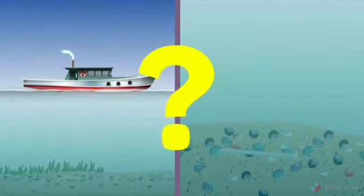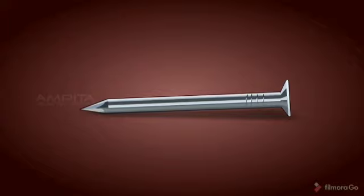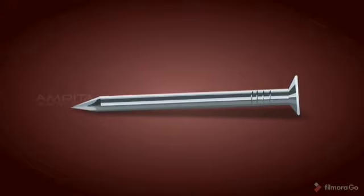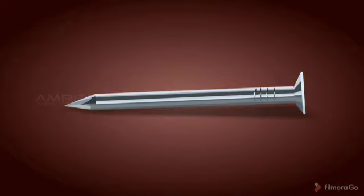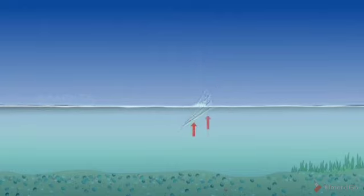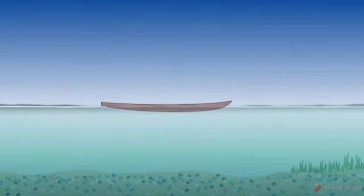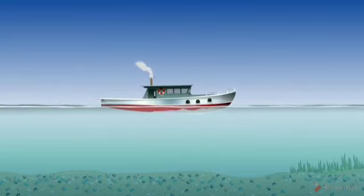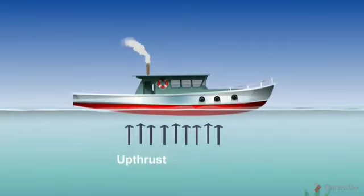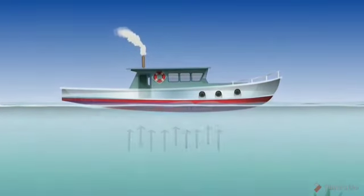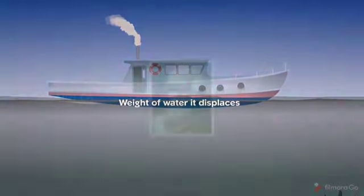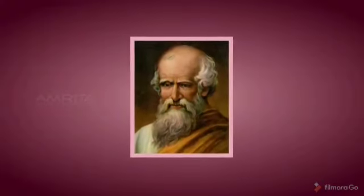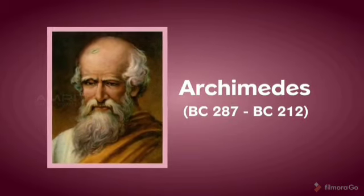Now let us understand why an iron nail sinks but a ship made of iron floats on water. An iron nail occupies less space; it is solid and compact, so its density is more than that of water. The up thrust experienced is less compared to its weight, so it sinks. Whereas a ship made of iron floats because it is hollow at the bottom with air space, giving it more volume and less density compared to water. The ship displaces water more than its own weight, so it floats.